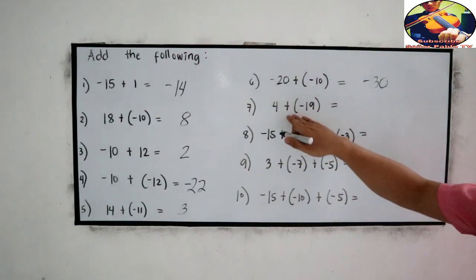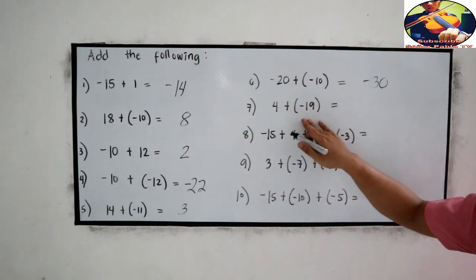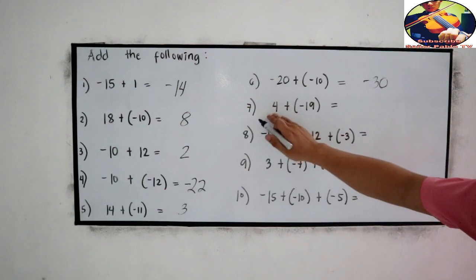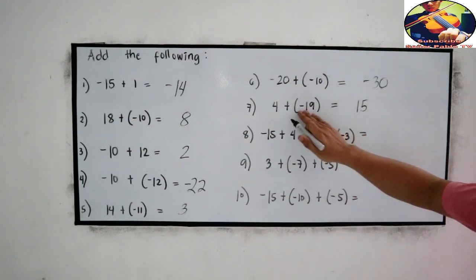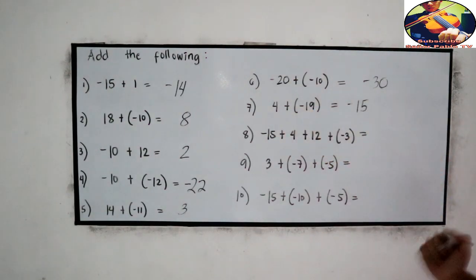Next, 4 plus negative 19. Unlike signs. So 19 minus 4, that's 15. Absolute value 19 is bigger. So negative 15.